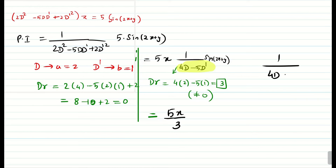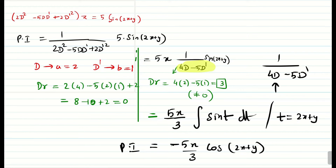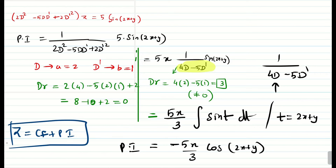The updated denominator is 1/(4d - 5d'). Check the highest power of d in this new operator — it is 1, so we integrate once. With t = 2x + y: ∫ sin(t) dt = -cos(t). Therefore PI = 5x/3 · (-cos(2x + y)) = -5x/3 · cos(2x + y). Write z = CF + PI to complete the solution.